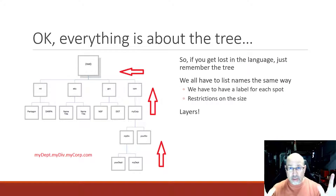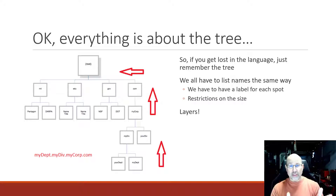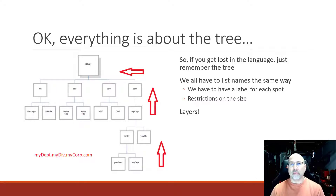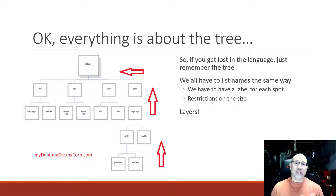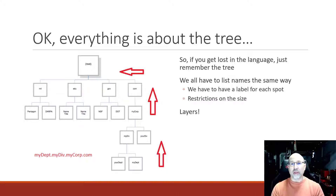Now before we get started, there's a lot to DNS — a lot of things to remember, a lot of terms and stuff like that. But it really all comes down to this tree right here. The tree is much larger than what we're showing here — much, much larger. But as we go over terms, if you start to get a little lost or forget what we're really all about, just bring your brain back to the tree.